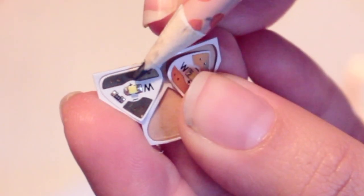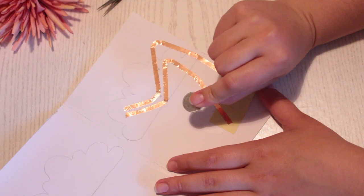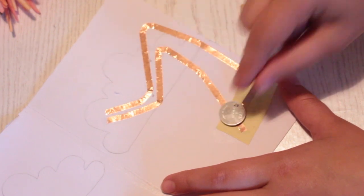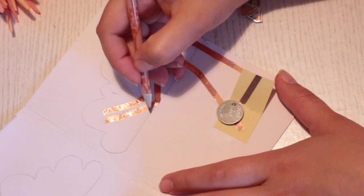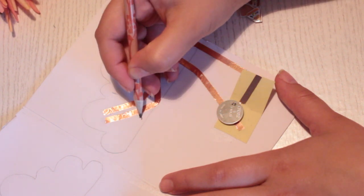On your lights, there's a positive and a negative sign just like with your battery. So the negative side is facing downwards and the positive side is facing upwards. So make markings on the circuit according to that.